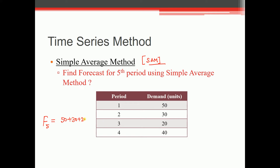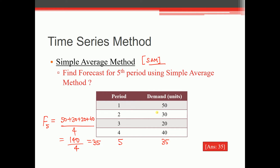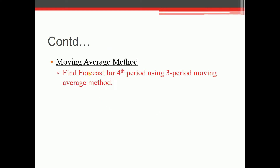So that is 50 + 30 + 20 + 40, divided by 4 periods. 50 + 30 = 80, + 20 = 100, + 40 = 140. 140 divided by 4 gives 35. So the forecast demand for the fifth period is 35 units. Moving on to the second method — the Moving Average Method, or MAM.